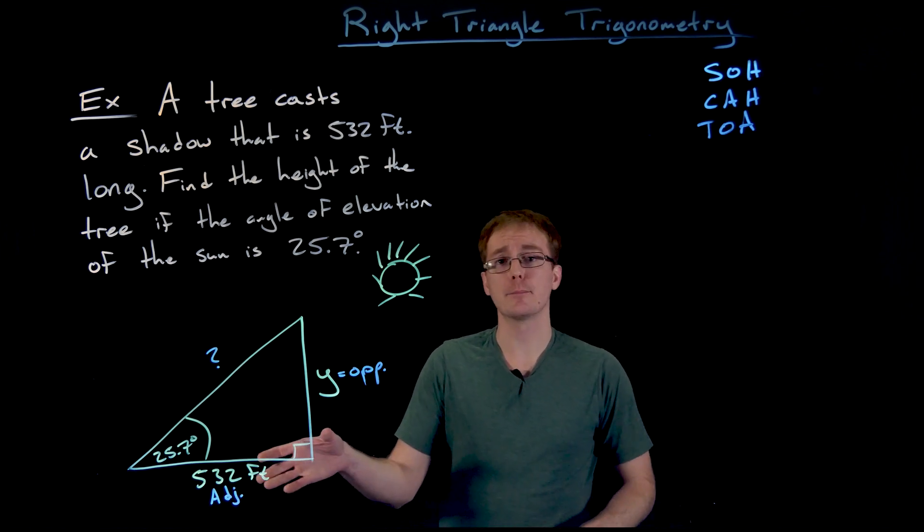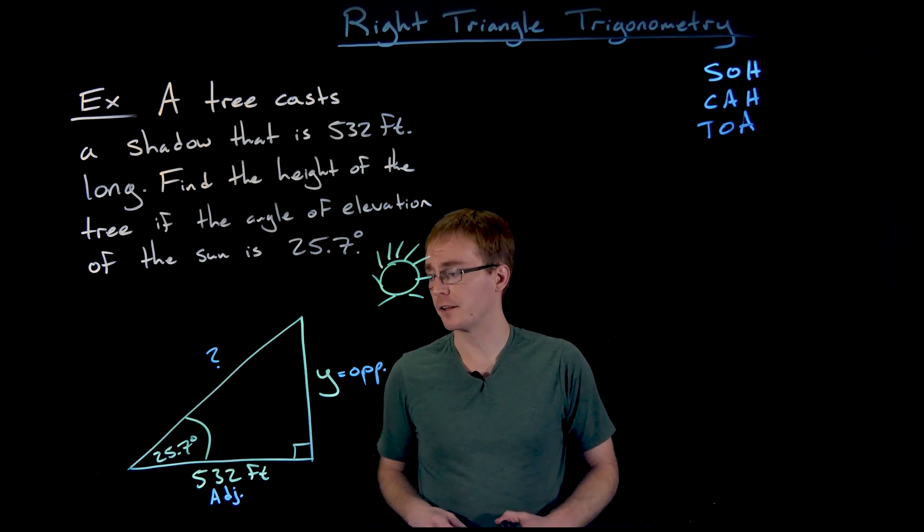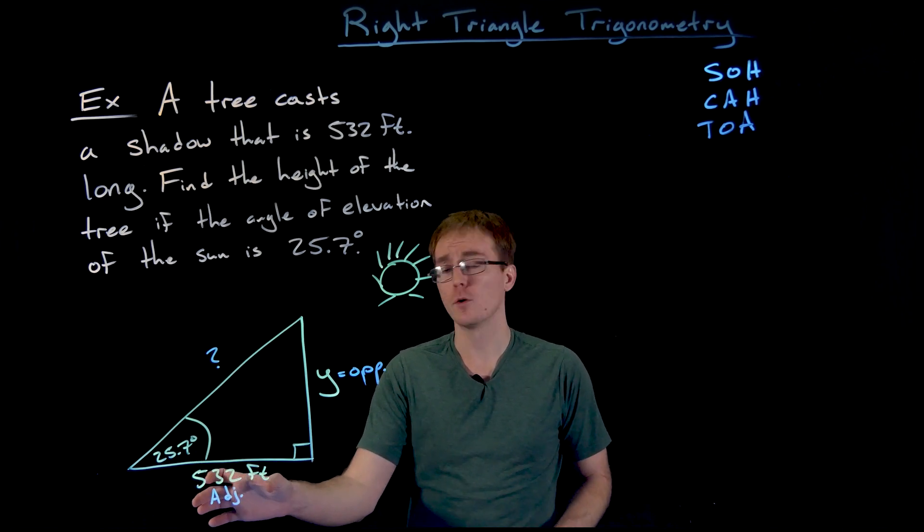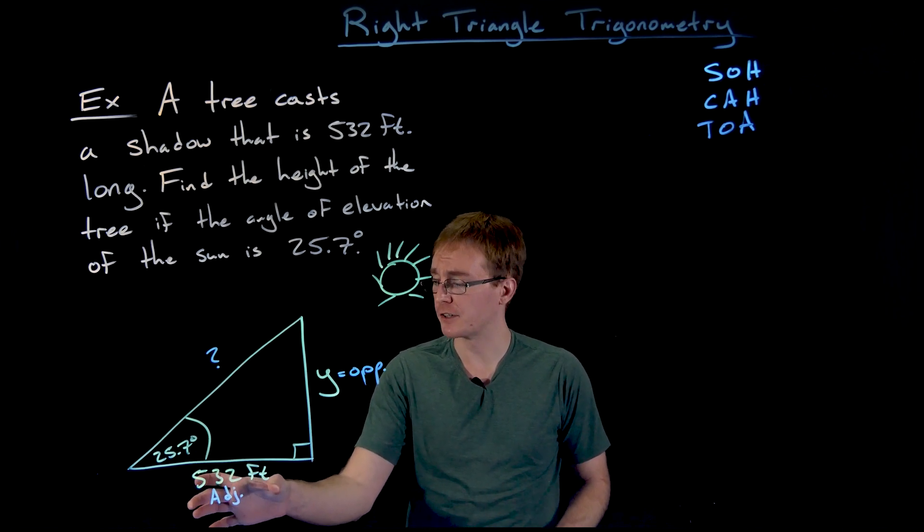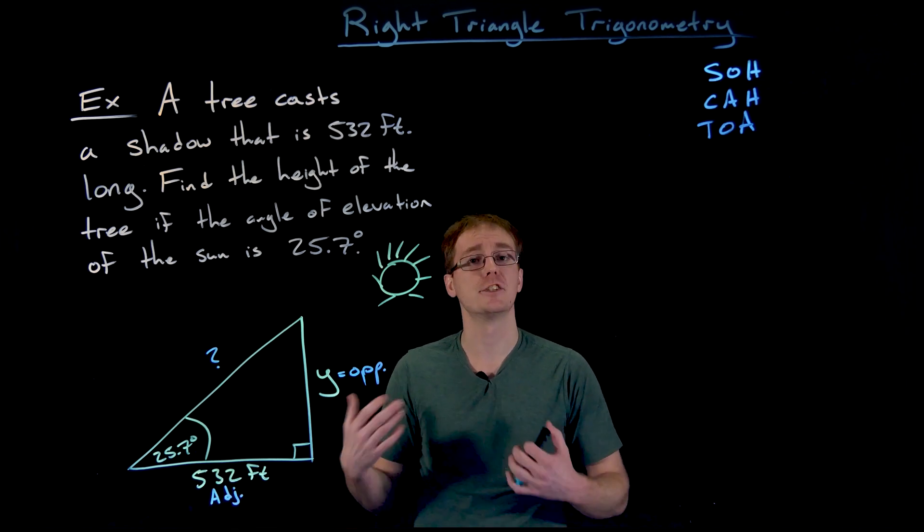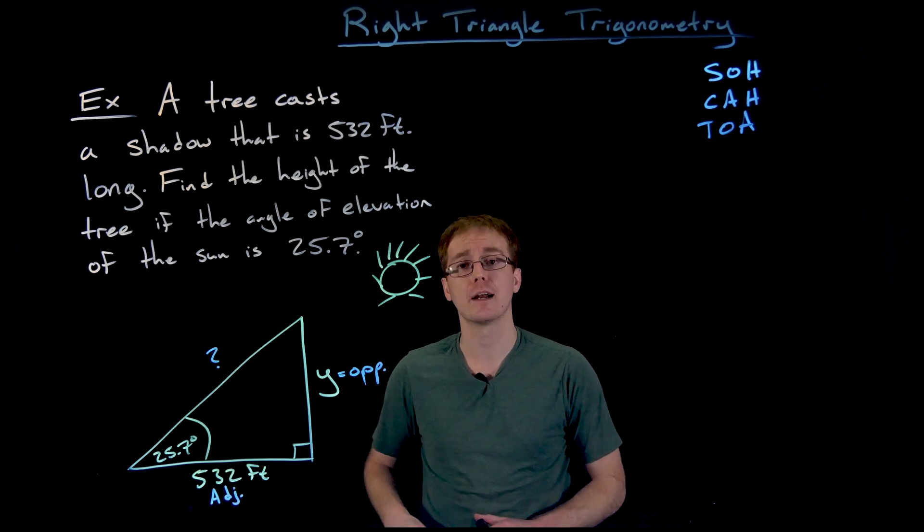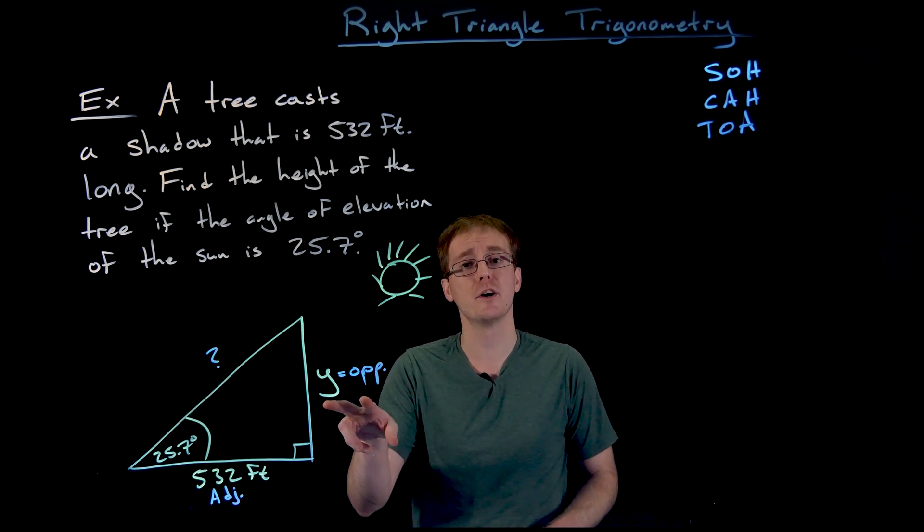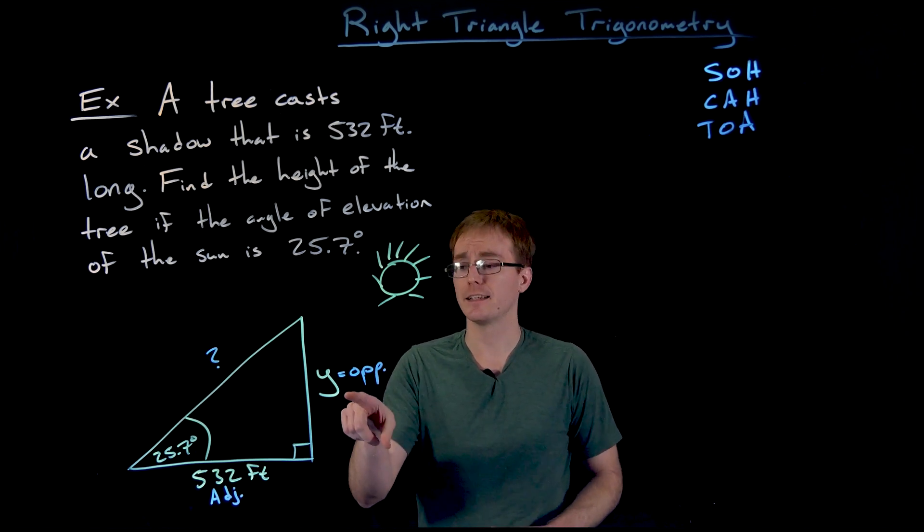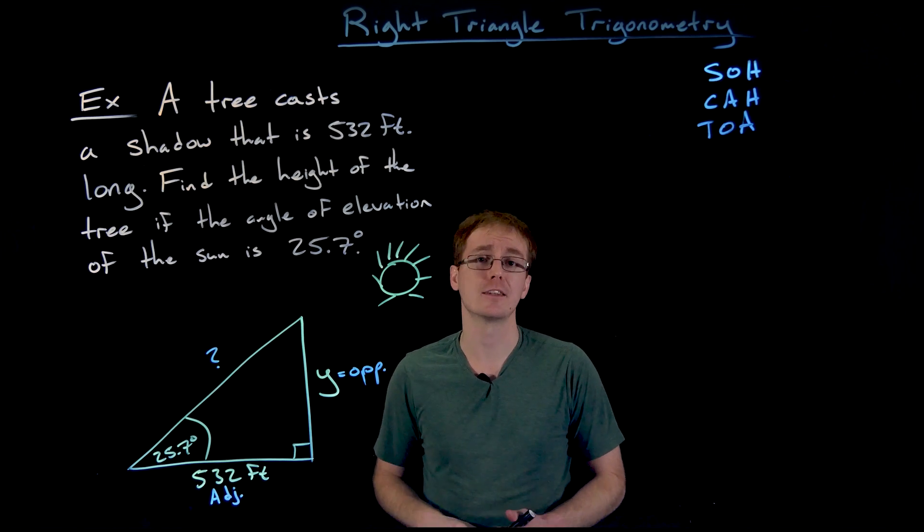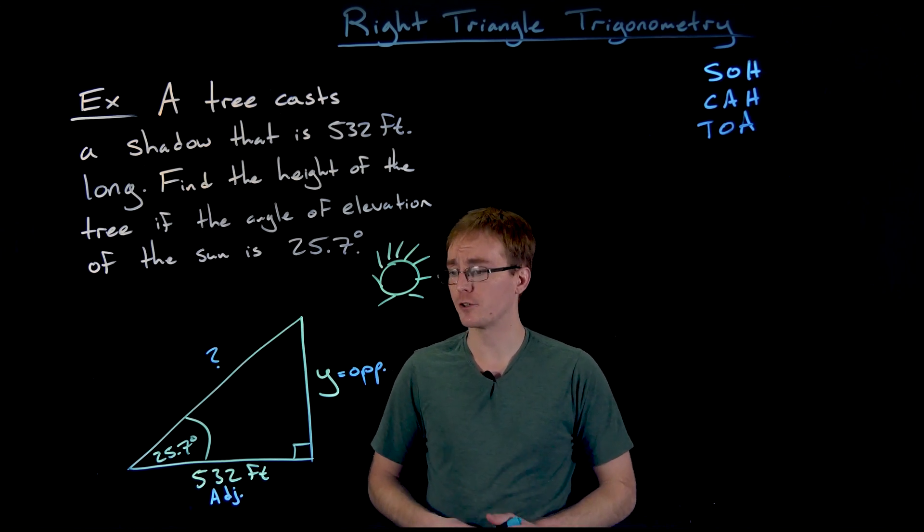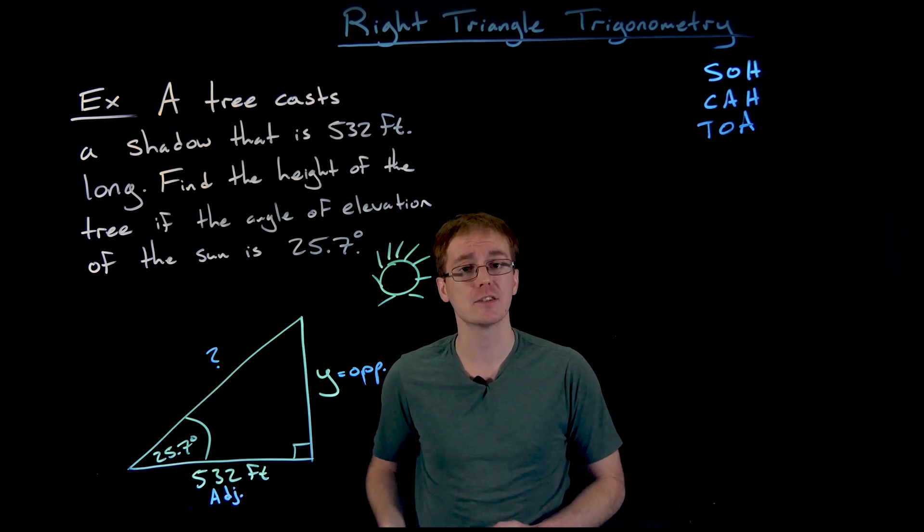All right, so now that we've relabeled our information with respect to our angle of interest, we have an angle of 25.7 degrees. We have this known side length of 532 feet that is our adjacent side length with respect to our angle of 25.7 degrees. And the other side length that we want to know that we don't know yet is y, the opposite side length of our angle.